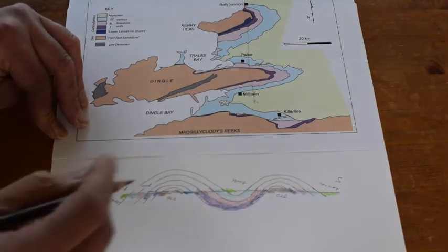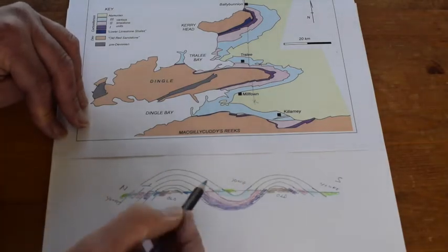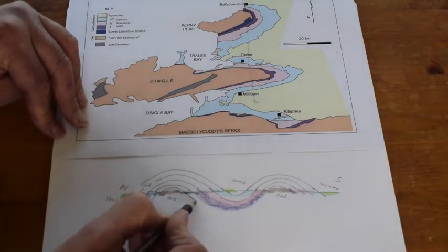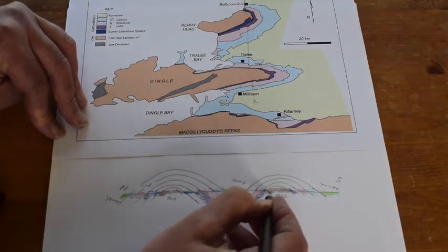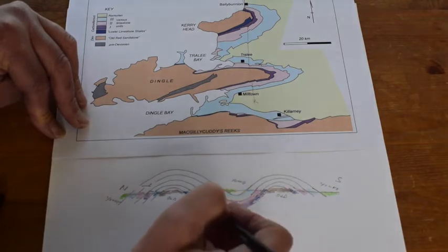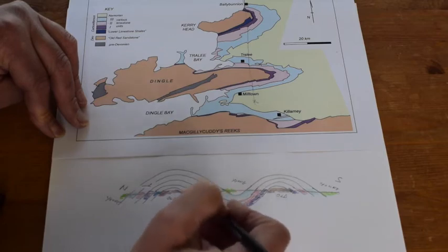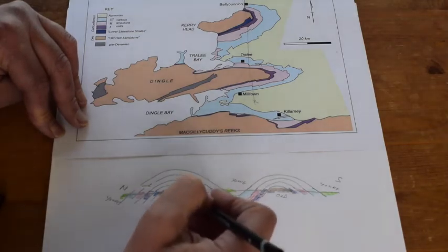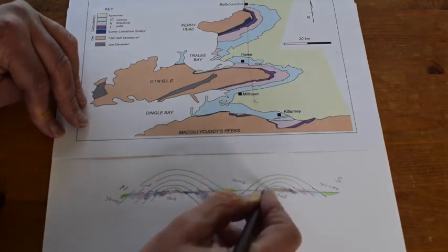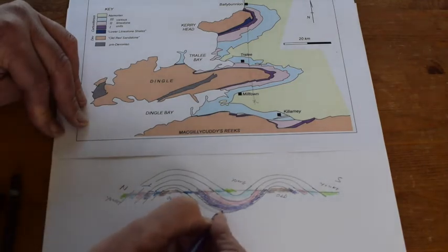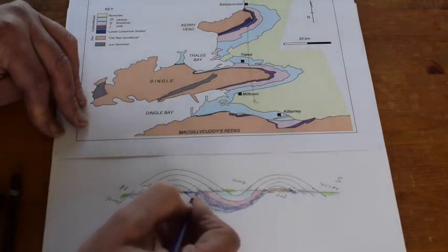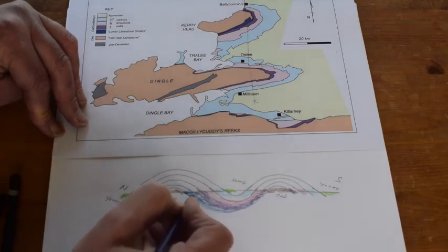What about the lower limestone shales? We see them here going down underneath carboniferous unit one, but they don't appear in the core of the Dingle anticline. These have to merge somewhere in the subsurface. The edge of the lower limestone series has to wedge out before it comes to outcrop here, somewhere in the subsurface beneath the syncline.